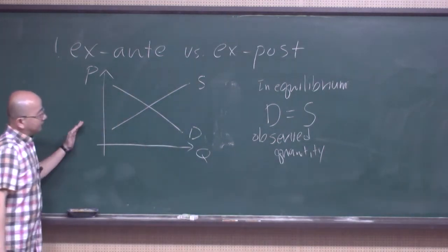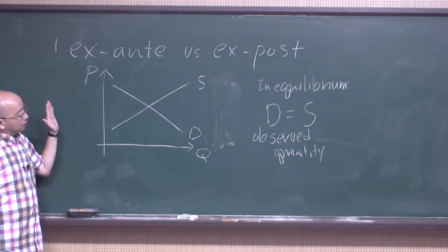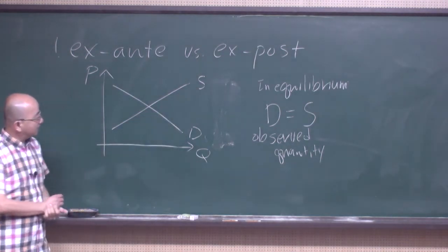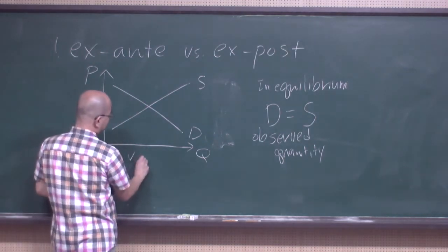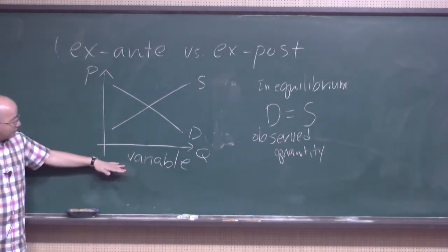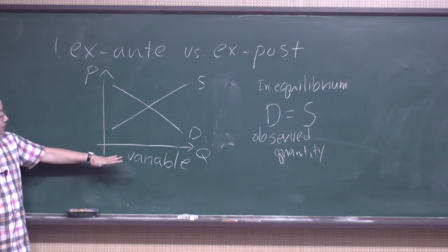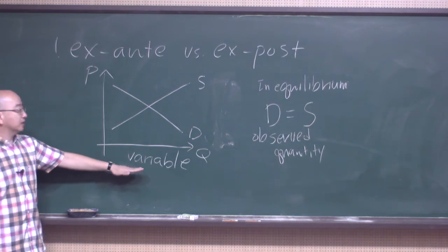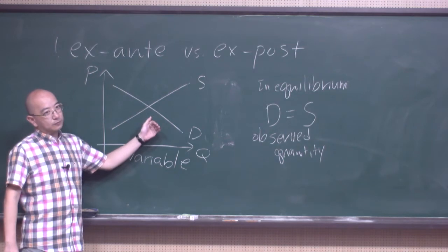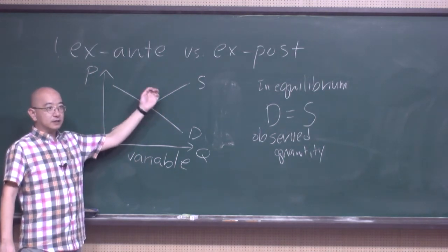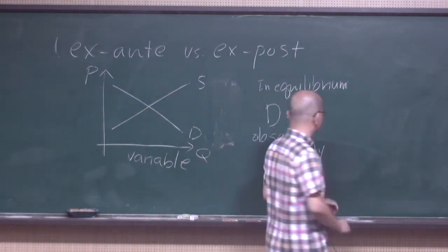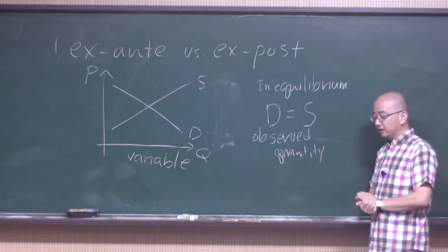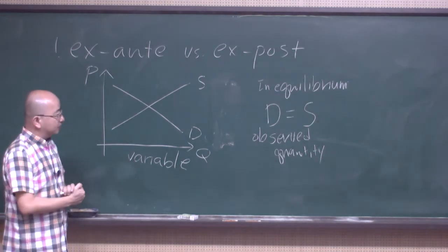Ex-ante means before the fact — before we observe the actual quantity in the market. When we think of demand and supply as variables, we are saying these variables can take some value out of many possible values. So when we look at them as variables, we don't fix the value, and that's why we can think of the possibility that supply is different from demand. But after the fact, we only observe one thing, so we cannot really talk about different demand and supply values.